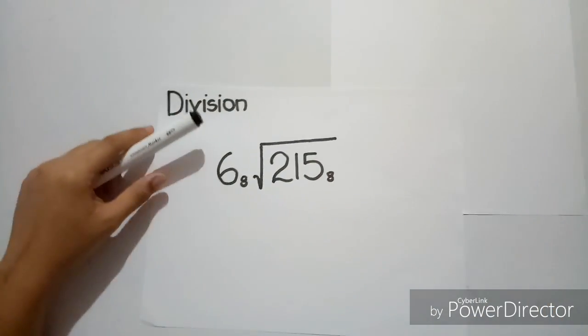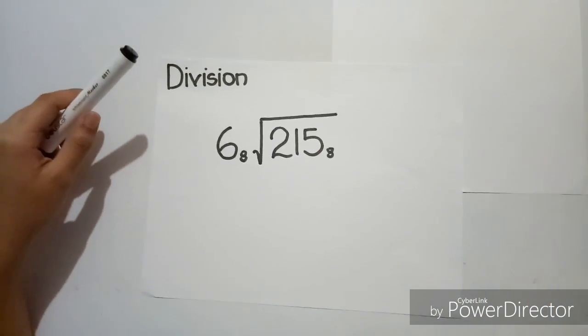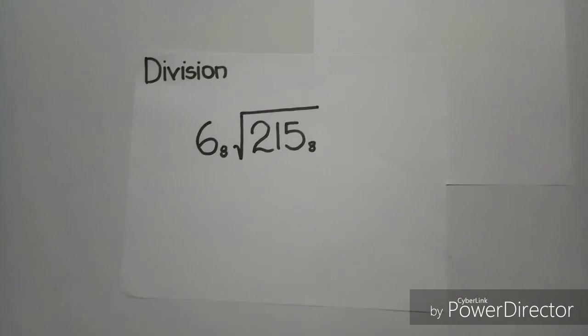Lastly, for the division, let's have 215 base 8 divided by 6 base 8.